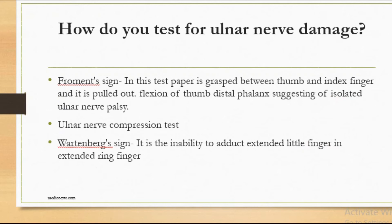To test for ulnar nerve damage, one test is Froment's sign: paper is gripped between the thumb and index finger; since adductor pollicis is supplied by the ulnar nerve and is paralyzed, flexion of the thumb's distal phalanx occurs — suggesting isolated ulnar palsy. Another test is the ulnar nerve compression test at wrist level. Wartenberg's sign is the inability to adduct an extended little finger or extended ring finger.